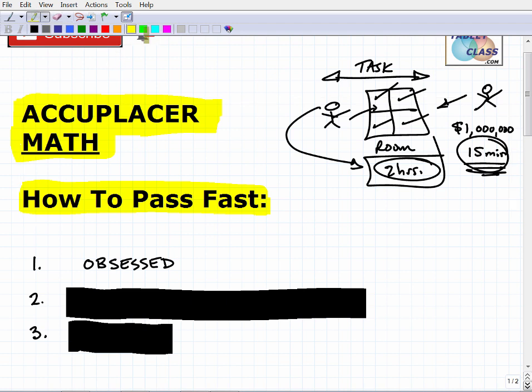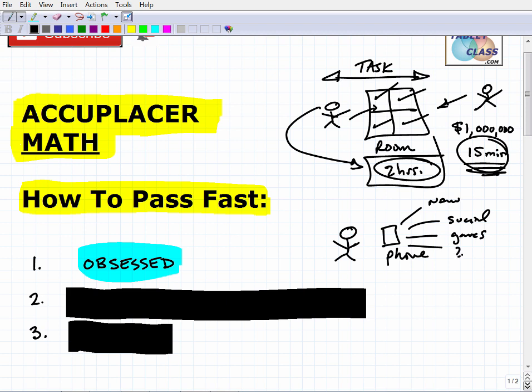The first one is you've got to get obsessed about the ACCUPLACER math exam. I'm not talking about commitment like, oh, I'm really going to do it. That's not going to work because look at your life. You got your phone. Your phone is your best friend and it's your worst enemy. Your phone is total distraction. You got news, social media, games, text messages.